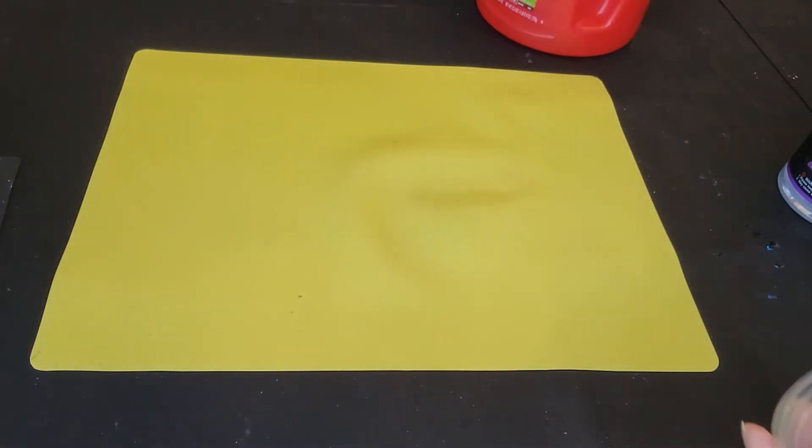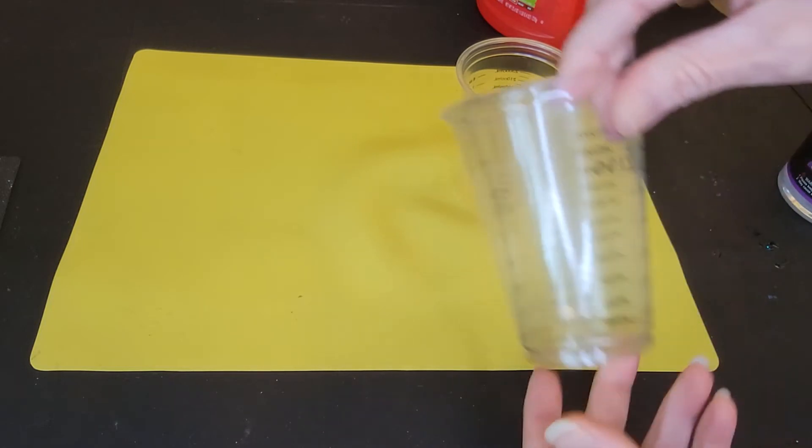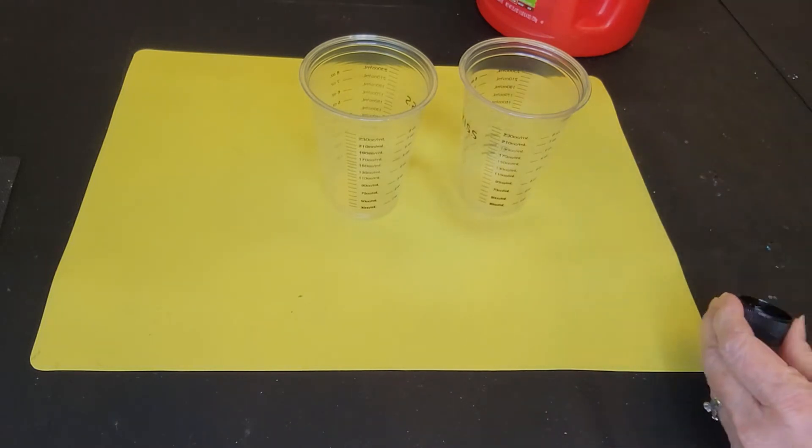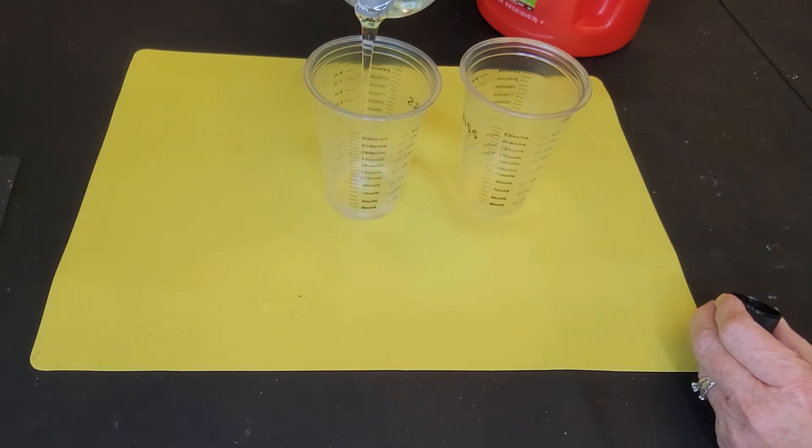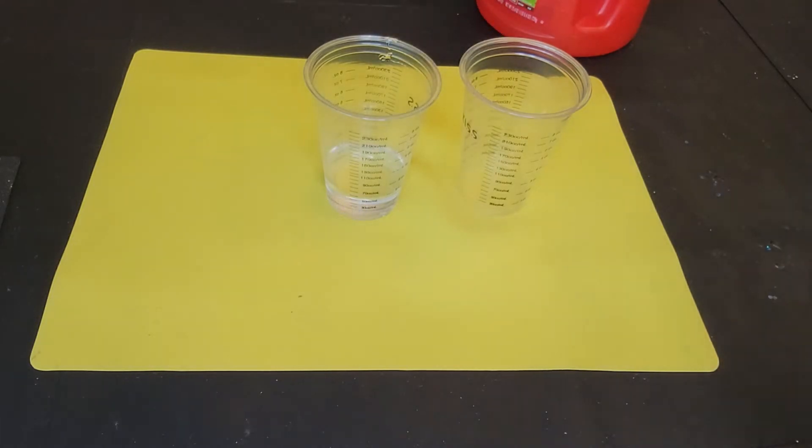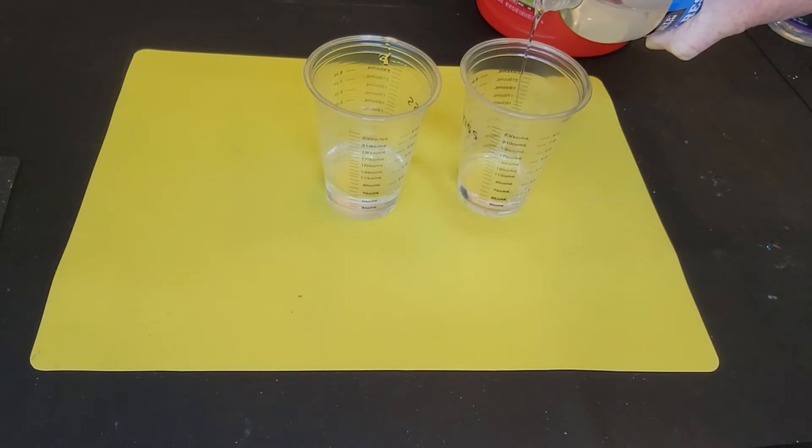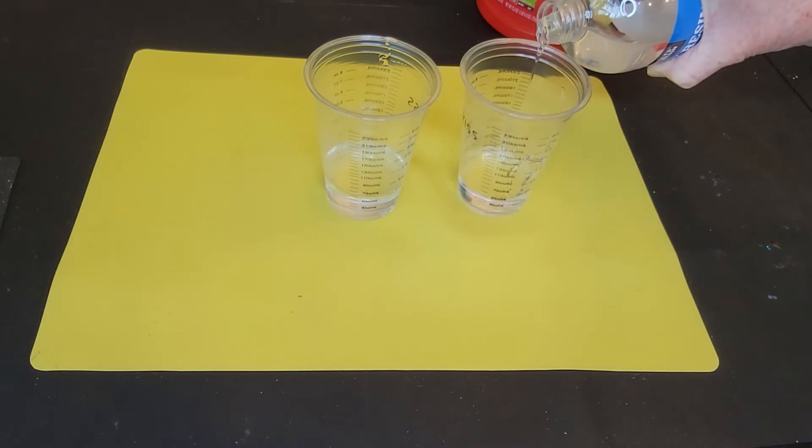So after we measure our resin out into our cups, we're going to pour part A and part B out into our cups. Let's see, this is part A and I'm going to pour out two ounces, and you want to measure super carefully. It's really important. Some people even weigh their resin and that works very well too. If you don't measure carefully, you could end up with a sticky mess at the end. You also want to pay attention to whether your resin is a one-to-one mixture or a one-to-two mixture. So read the directions.